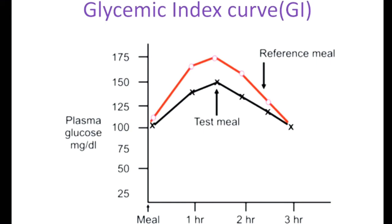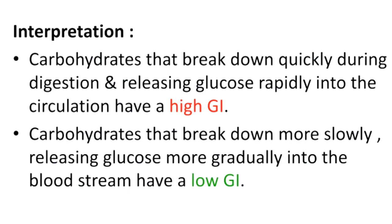Coming to the significance of high GI and low GI: some carbohydrates, when taken, break down quickly during digestion and release glucose rapidly into the blood circulation — those are called high GI foods. In contrast, some foods break down more slowly and release glucose gradually into the circulation — these are called low GI foods.